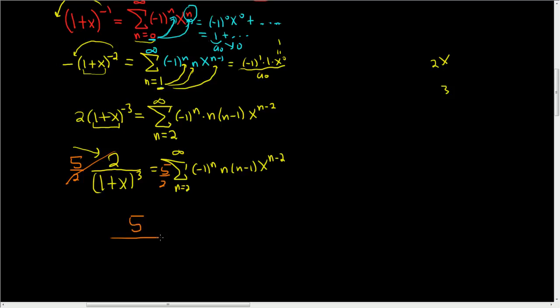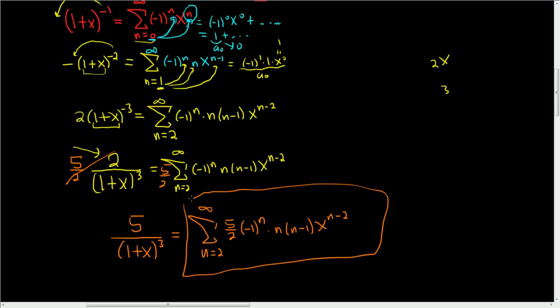So 5 over 1 plus x quantity cubed, this is beautiful stuff, is equal to the sum as n runs from 2 to infinity. Let's put the 5 halves on the inside. So 5 halves, negative 1 to the n, times n, times n minus 1, and then times x to the n minus 2. And that is the power series. That is the power series.